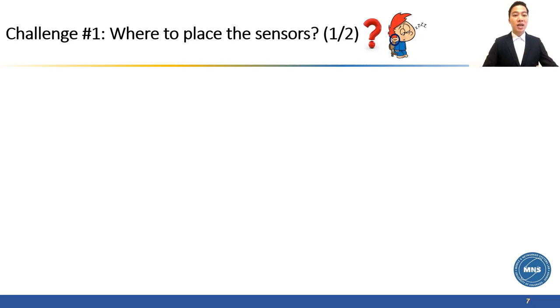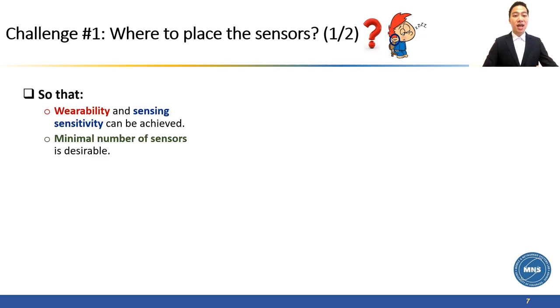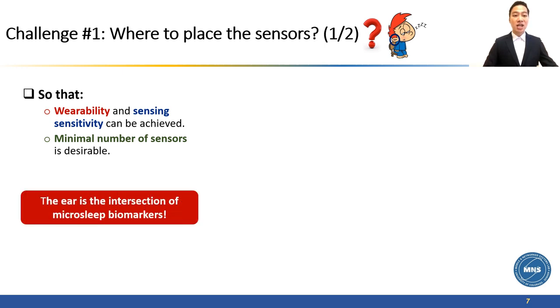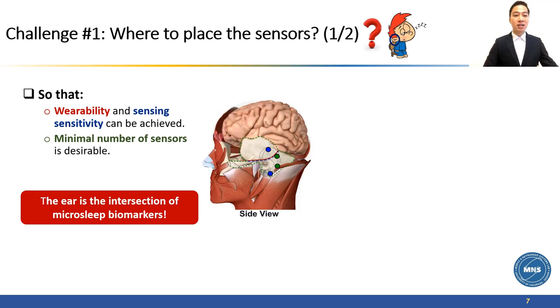The first challenge that we need to tackle is to identify the location of our sensor so that wearability and sensing sensitivity can be achieved, and a minimal number of sensors is also desirable. Our key observation here is that the ear is the intersection of multiple microsleep biomarkers, such as theta activity in the midbrain area, alpha wave from the occipital, EOG from the movement of the eyes, EMG from muscle groups linked to the chin, and EDA from the sweat glands on the back of the ears. Besides, it is also a natural harbor point where a wearable device can be worn.